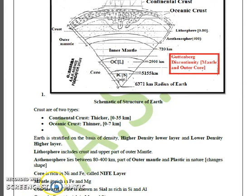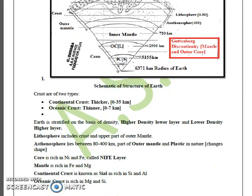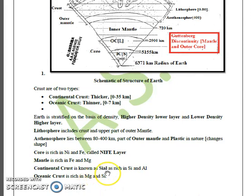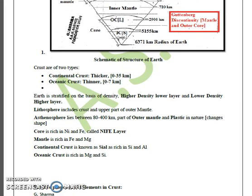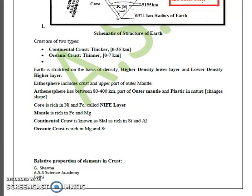The mantle is generally rich in iron and magnesium, so it is also called the FeMg layer. The continental crust is rich in silicon and aluminum, which is why it is sometimes called the Sial layer. The oceanic crust is rich in silicon and magnesium, so it is sometimes called the Sima layer.